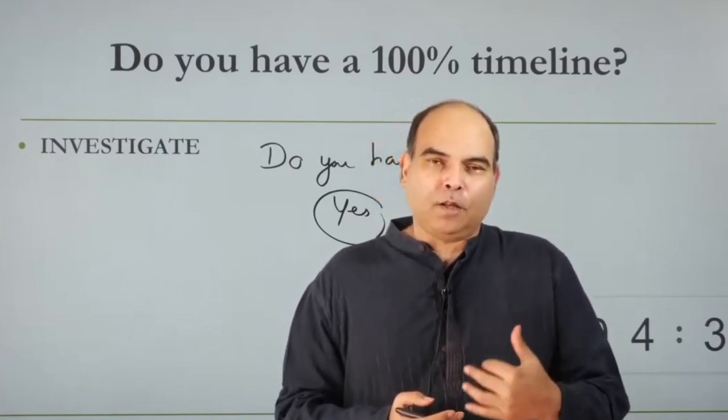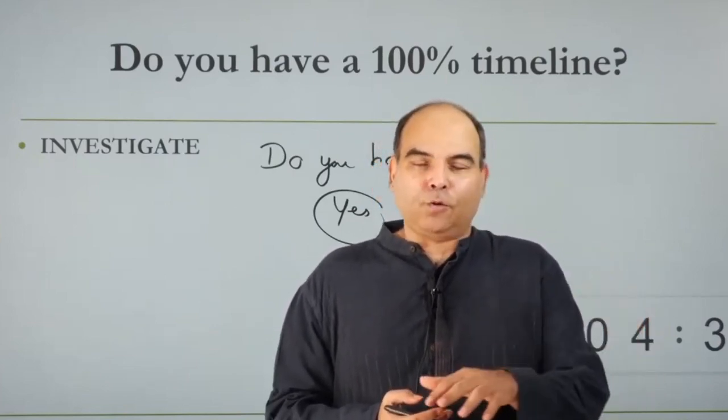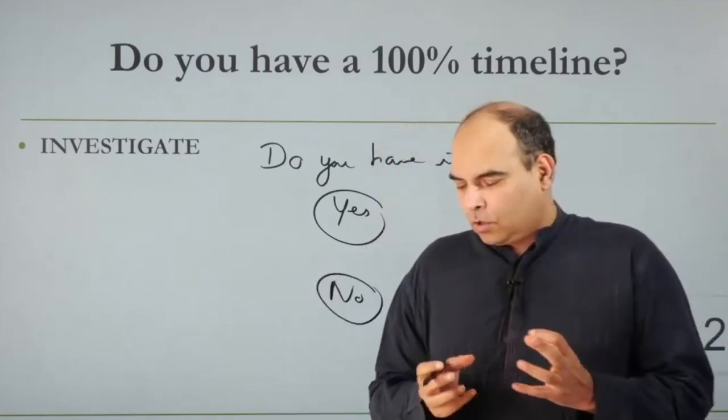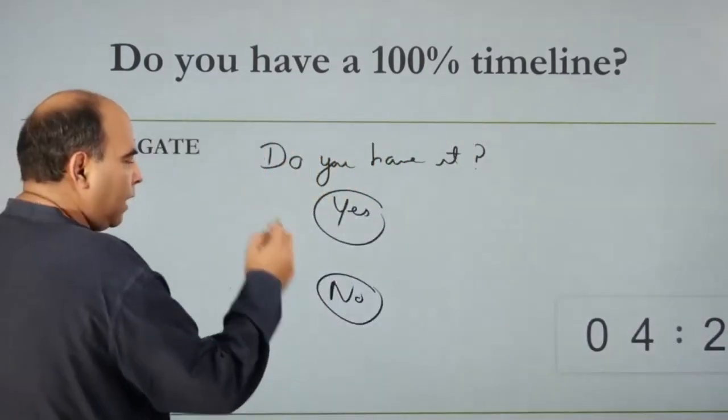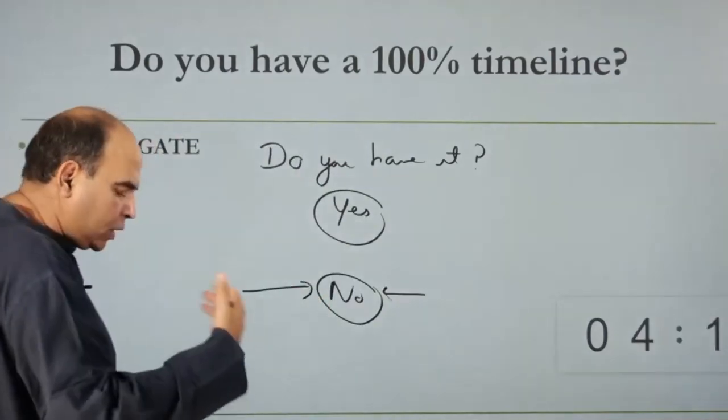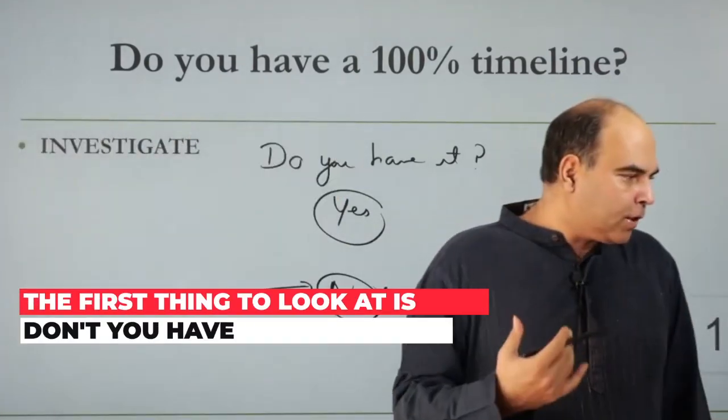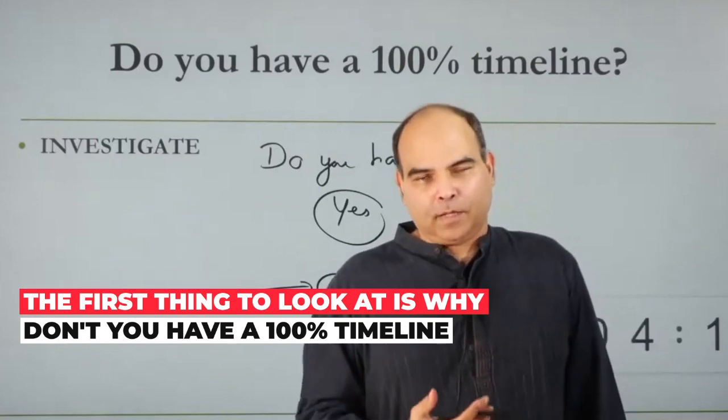The first solution you have to tackle if you do not have a 100% timeline is the flowchart of what you should do next. So the first thing you look at is: why don't you have 100% timeline?